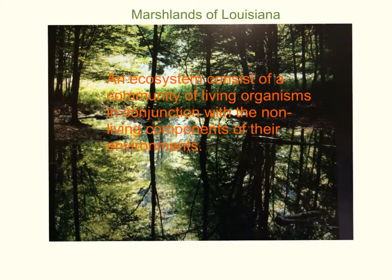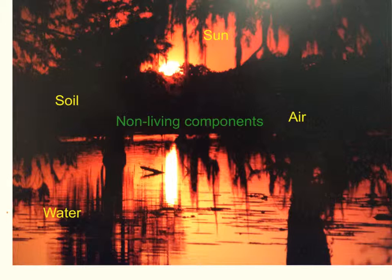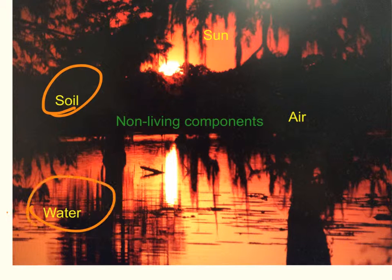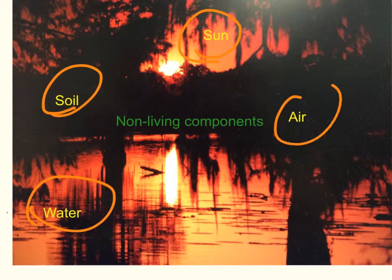An ecosystem consists of a community of living organisms in conjunction with the non-living components of their environments. The non-living components of an ecosystem are soil, water, sunlight, and air.